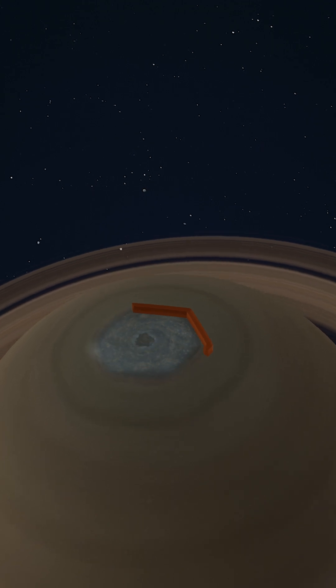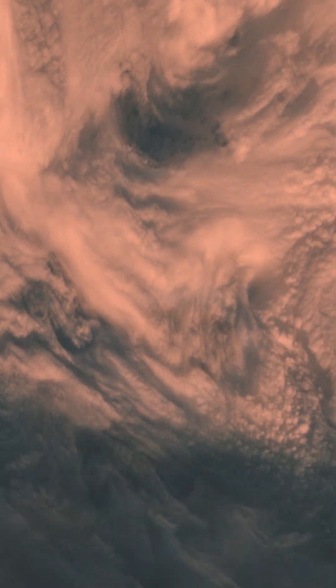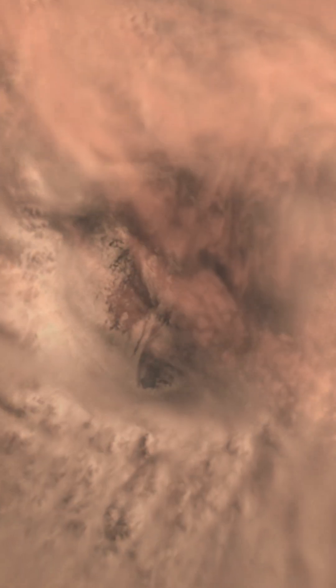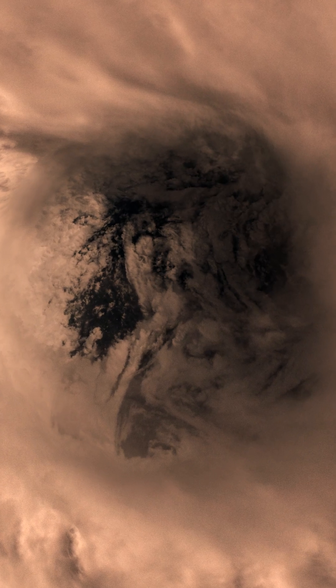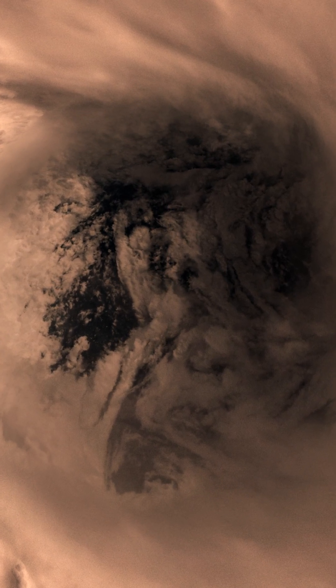And that's not all. The hexagon isn't just a surface feature. It extends deep into Saturn's atmosphere, stretching more than 180 miles down. And at its center lies a hurricane-like eye with winds blasting at over 300 miles per hour.